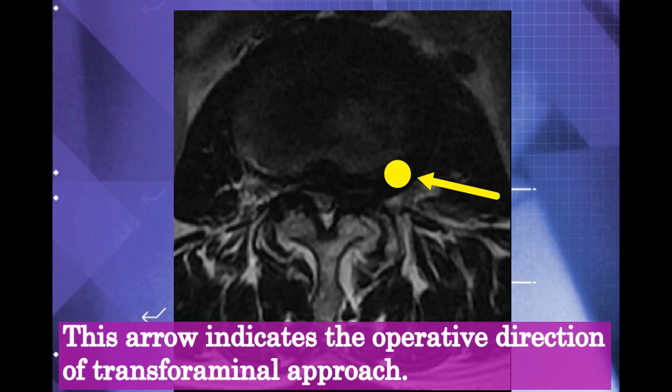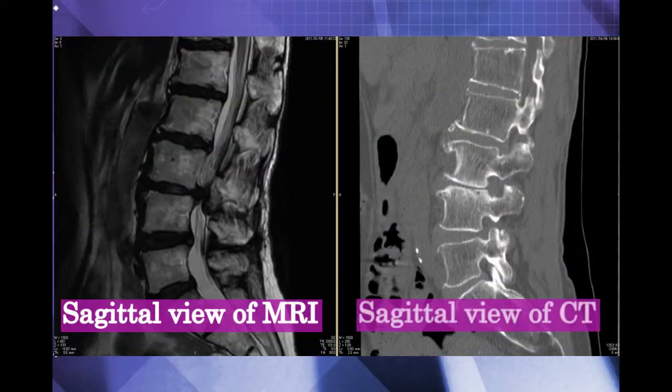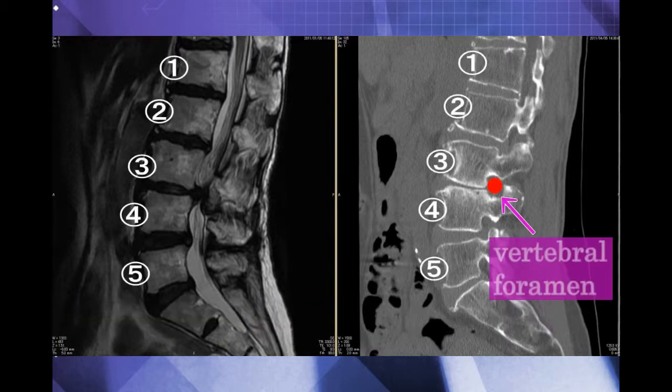Through the left lateral foramen, we first removed the lateral herniation, then removed the central type herniation. These are views from MRI and CT, with the left lateral foramen marked as a red circle.